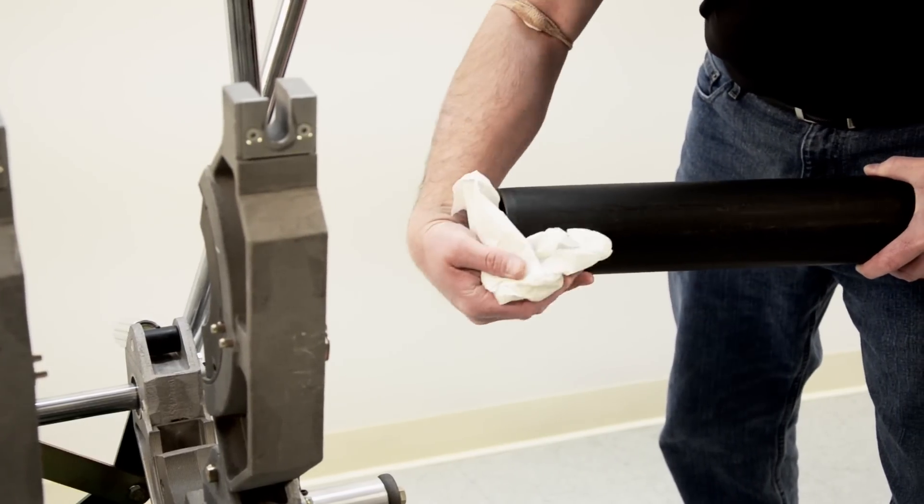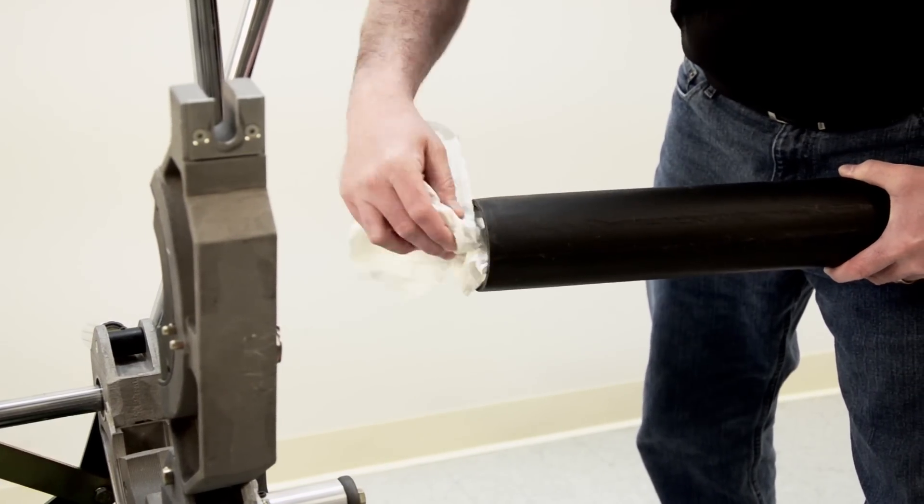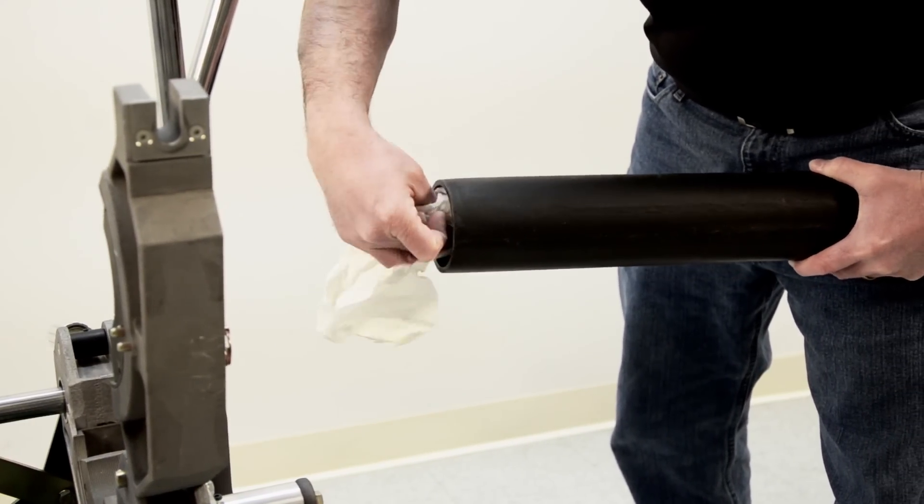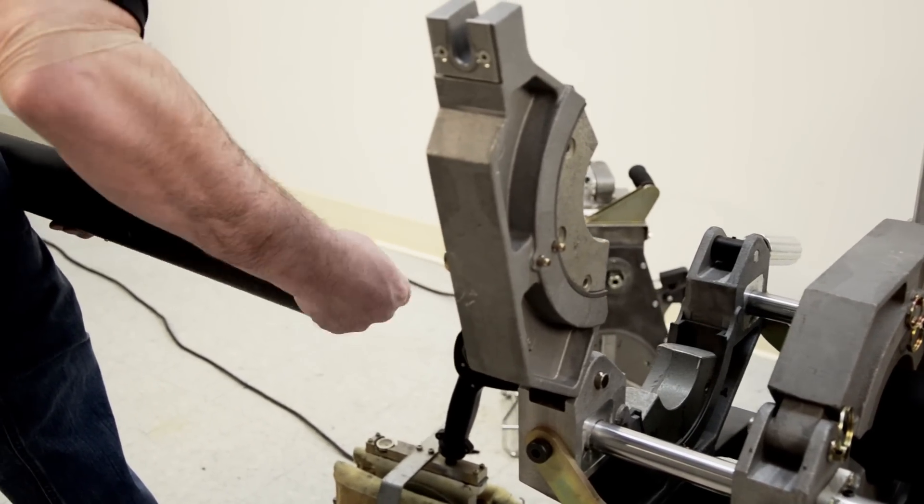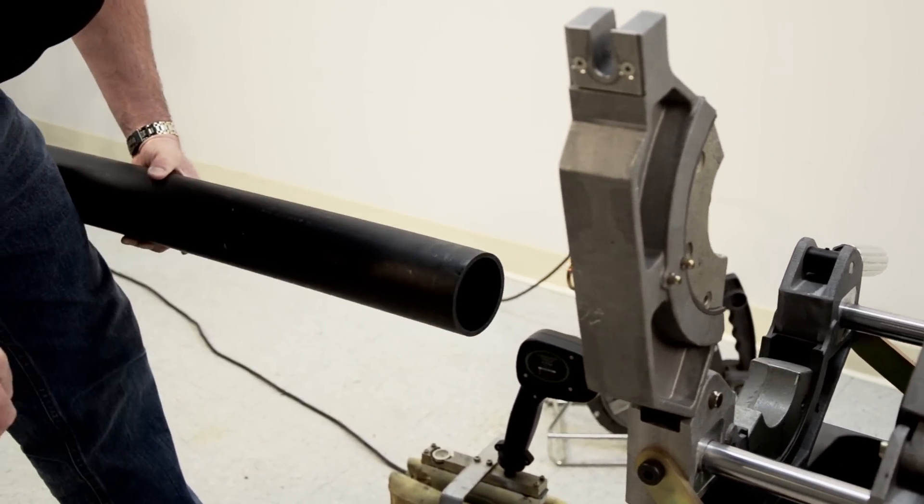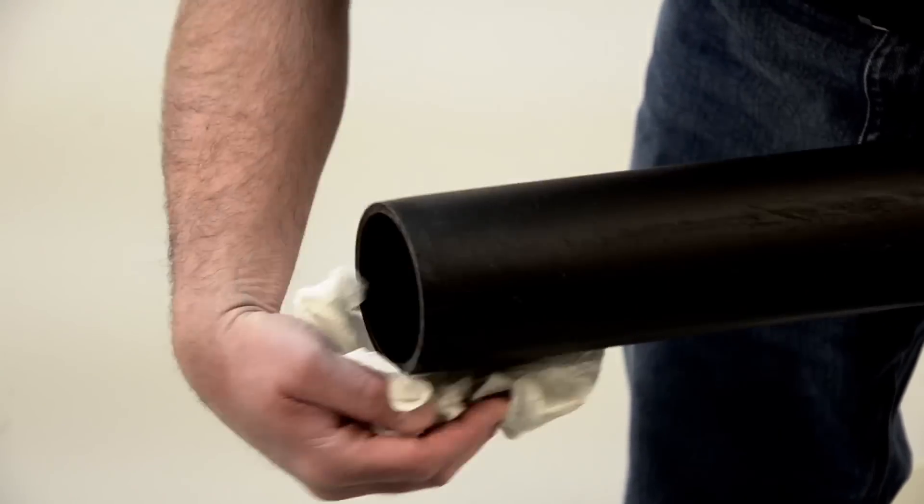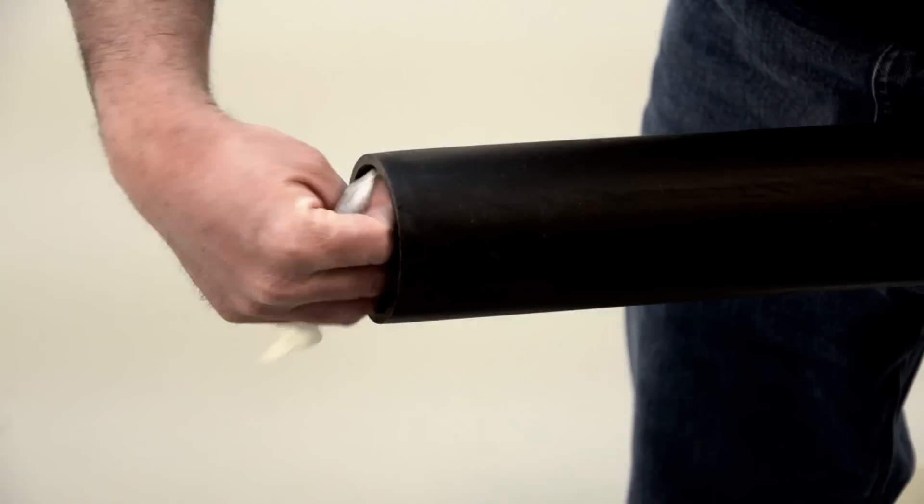Ensure that both ends of the pipe to be fused are clean. The best material to use for cleaning the pipe is a clean, dry, lint-free cloth. Ensure all possible contamination is cleared from the fusion area of the pipe, both inside and out.